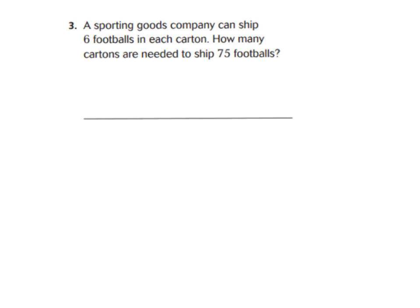Let's look at number 3 in your GoMath book — draw a star by number 3. Number 3 reads: a sporting goods company can ship 6 footballs in each carton. How many cartons are needed to ship 75 footballs? We need to find out: if we have 75 footballs and 6 footballs go into each carton, how many cartons do we need? My problem is 75 divided by 6.